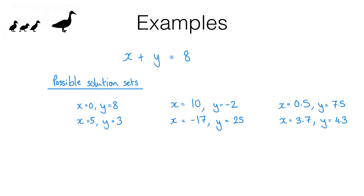So it's not really sensible to ask you to solve an equation with just one equation but two unknowns. But what if I give you some extra information? What if I'm looking for a solution set to this equation that is also a solution set to a different equation? So what if my other equation was X minus Y equals 2? I want to find the same solution set to both. We could do this by trial and error. Is 0 minus 8 equal to 2? No, so that's not a solution set to this equation.